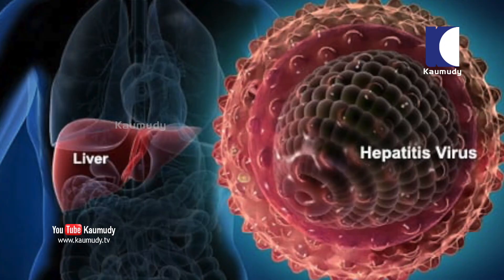Hepatitis means a viral infection. There are many types. First, we have A and E, which are spread through food and water. The other types, B and C, are spread through blood. Hepatitis is a viral infection where the liver is damaged. That is called Hepatitis. In Malayalam, it is called Manjapitha.